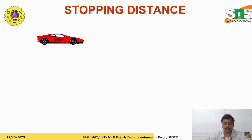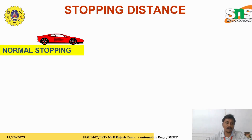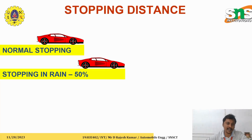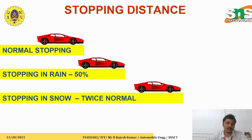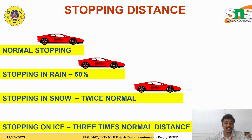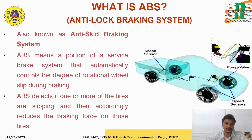Braking is very important in order to reduce the stopping distance of the vehicle at the desired place. On a normal surface there is a standard stopping distance, but on wet or rain surfaces it is 50% higher. On snow the stopping distance is twice the normal, and on icy surfaces it is three times the normal stopping distance.